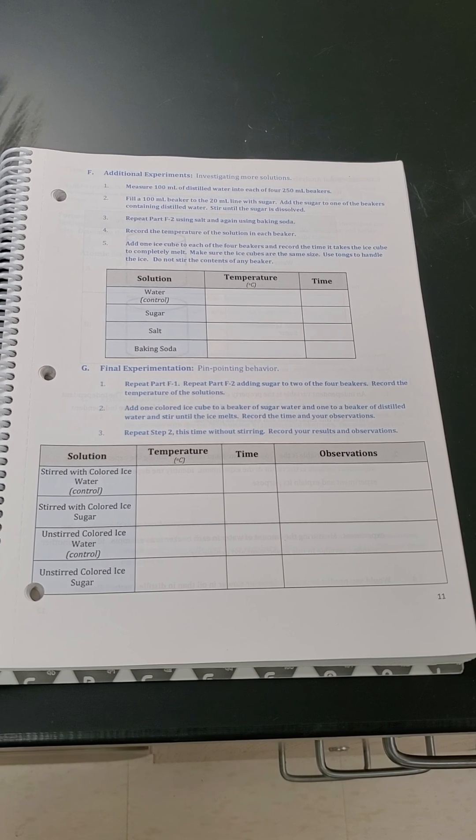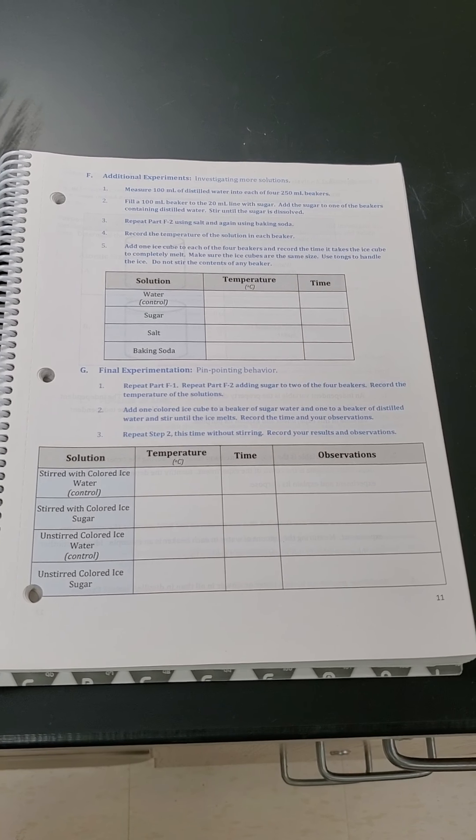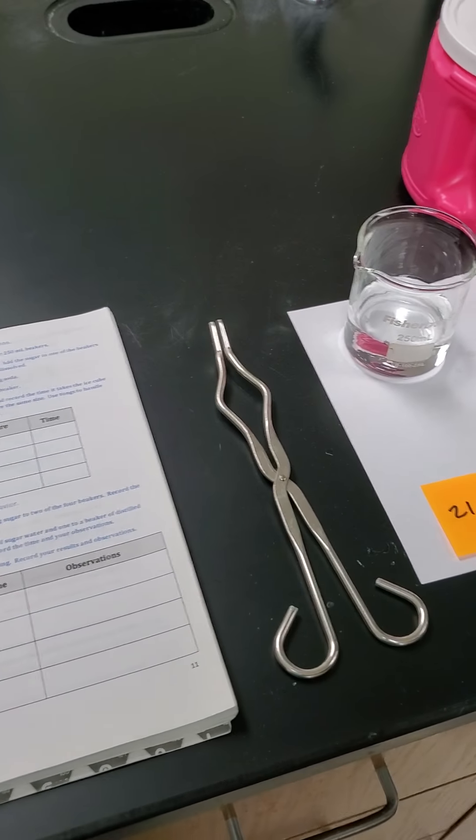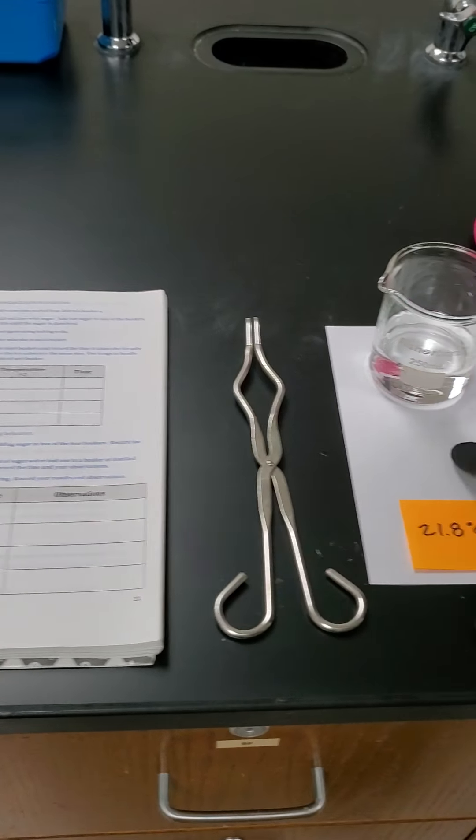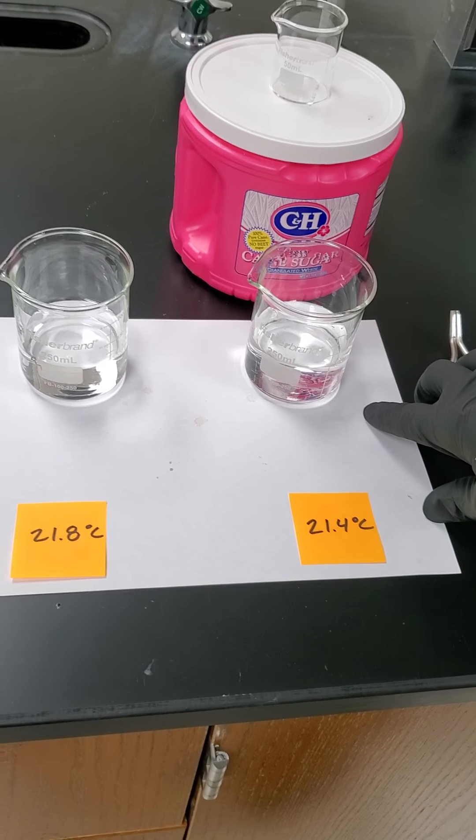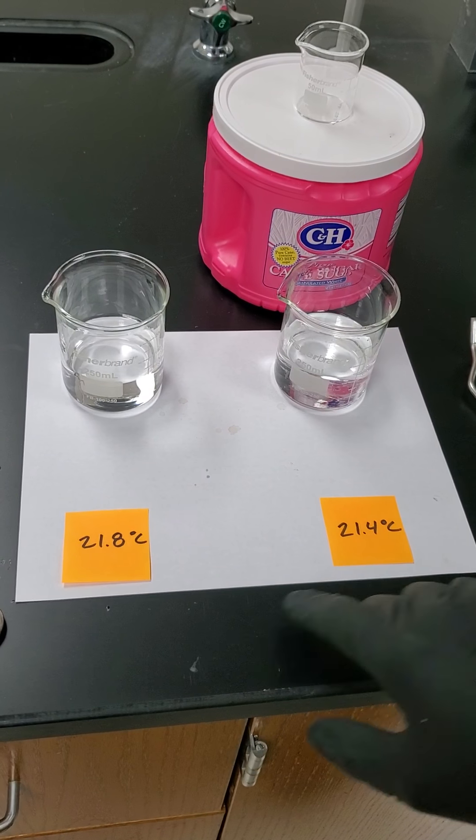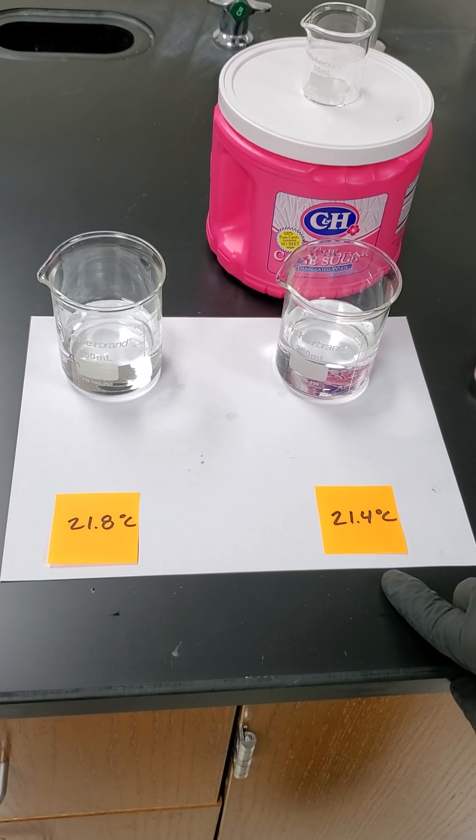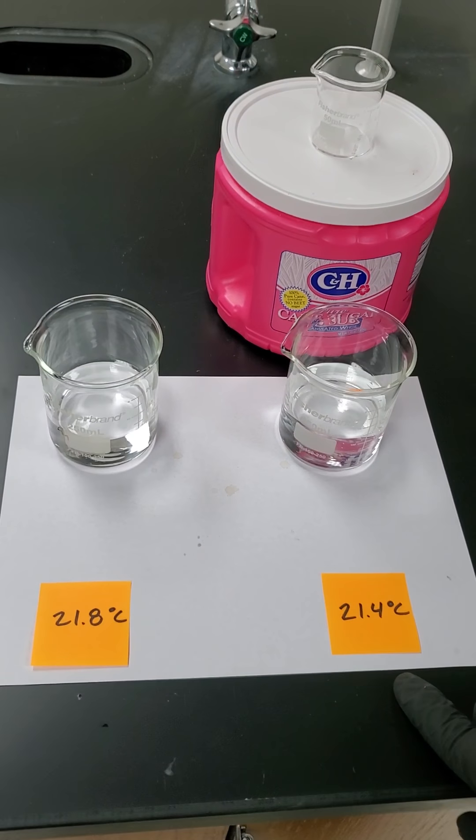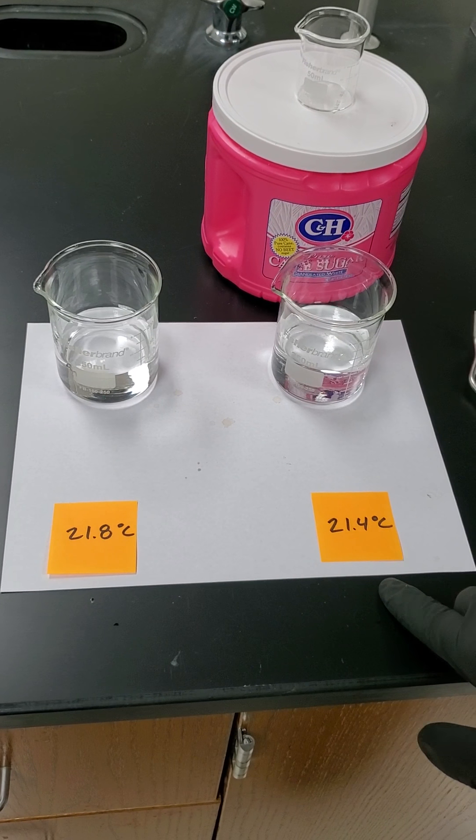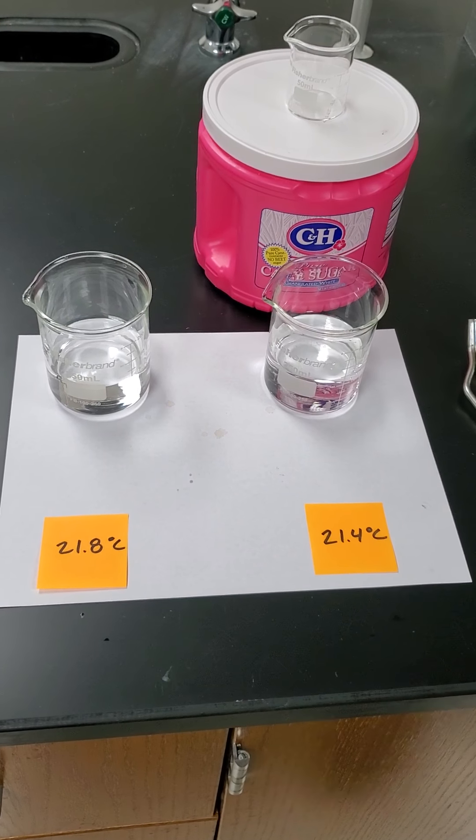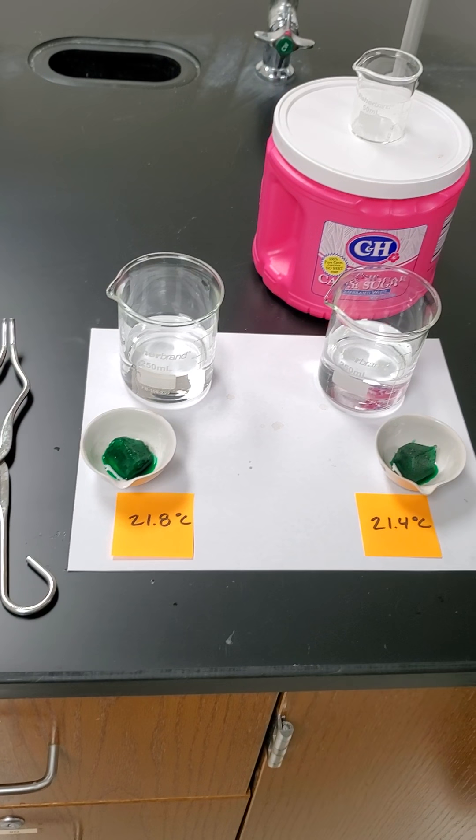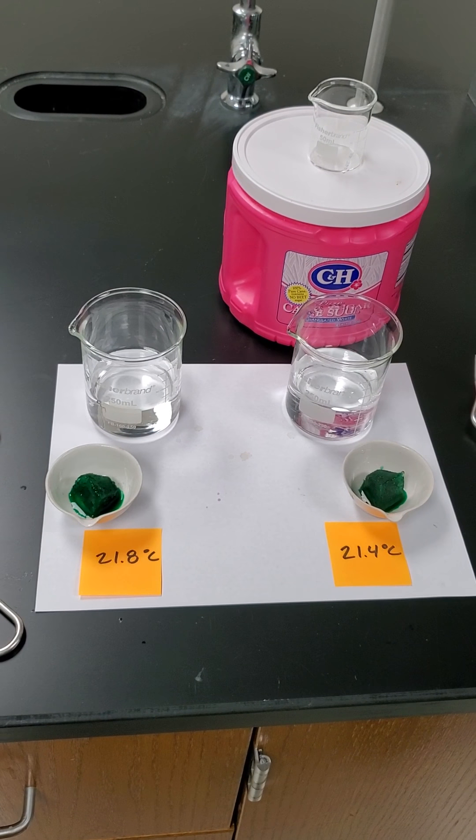If water is winning, the easiest way to tell is to see where the melted ice cube goes by using some colored cubes. We're going to take these colored cubes and drop them in to some pre-made solutions. I went ahead and added the sugar, stirred it in, got it to room temperature. For our control water, we have a 21.8 degree temperature. For our sugar water, we have a 21.4 degree temperature. So definitely close enough to be pretty accurate.